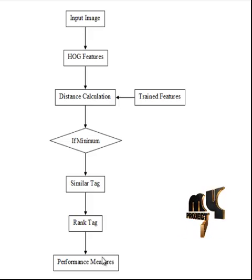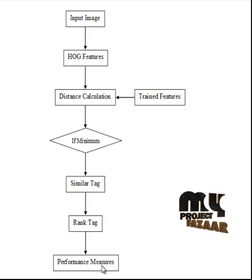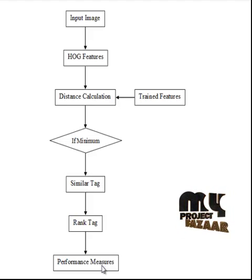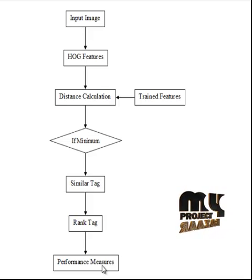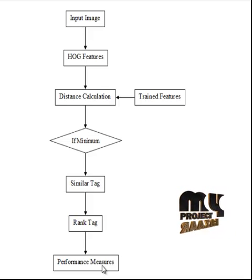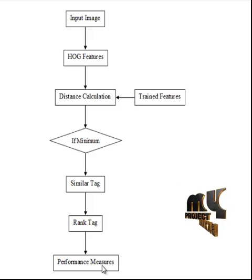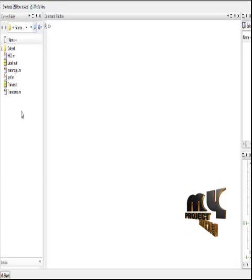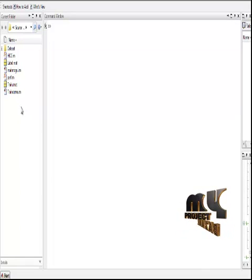The performance of the process is measured in terms of precision and recall values. Precision and recall denote the matching of the total number of tags correctly identified and the exact tags for the input images. Now let us see the running procedure of the process.